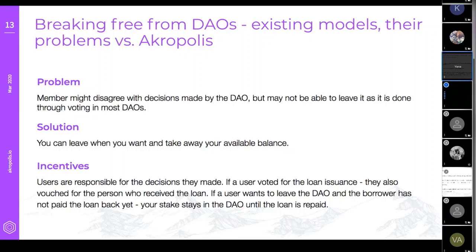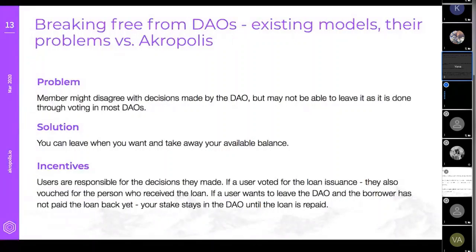While we have enabled rage quit, we also want to give users as much information as possible. At any moment in time, users can see a haircut — basically their cost of exit — calculated programmatically. If a user wants to leave the DAO and a borrower has not yet repaid an outstanding loan, the user's stake stays in the DAO until the loan is repaid. We're still iterating on those incentives and on how to make the pool more efficient and resilient.